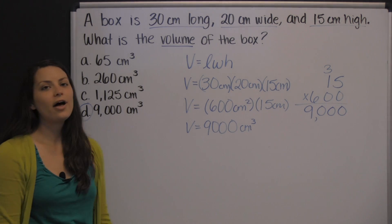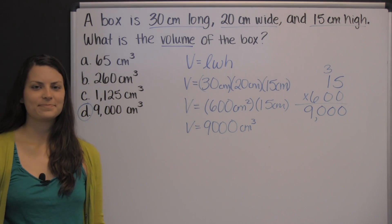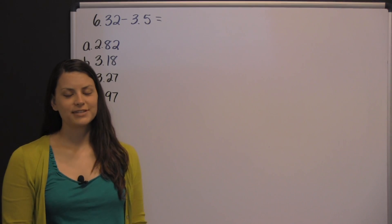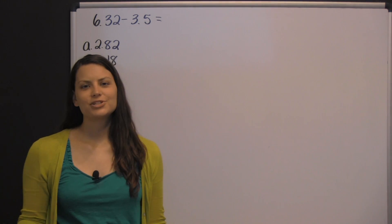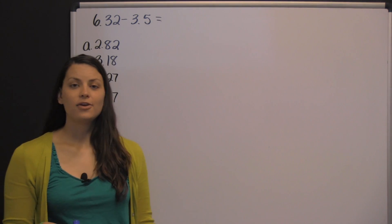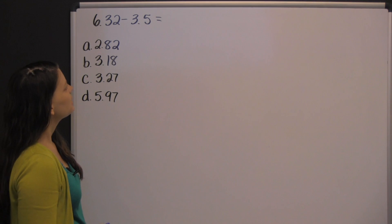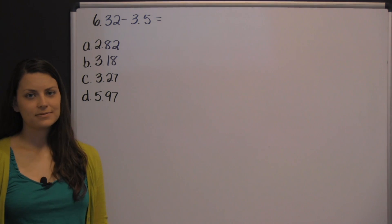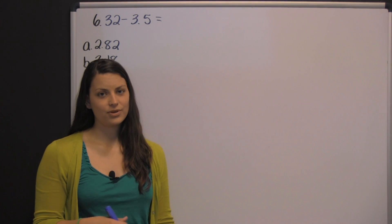Here's an example of an arithmetic question that you might see when you take the Accuplacer exam. The Accuplacer exam has an entire arithmetic section — arithmetic just means simple math. Here's one type of problem you may encounter: six and thirty-two hundredths minus three and five tenths. You need to be prepared to do these types of questions without a calculator.